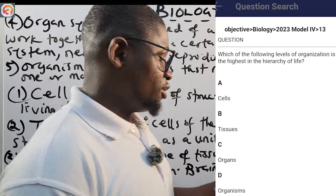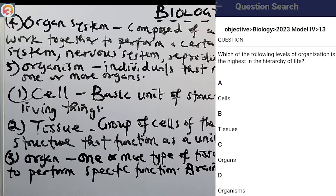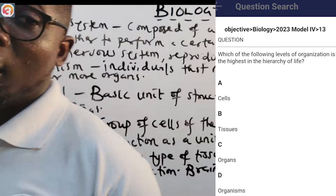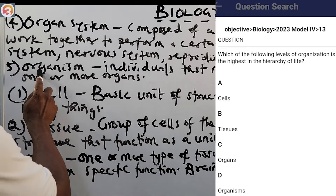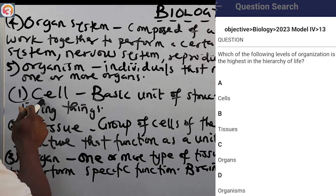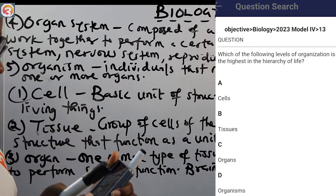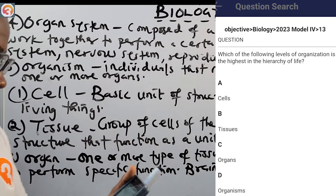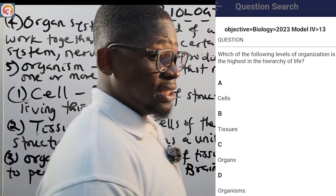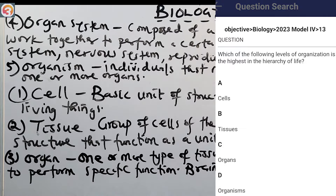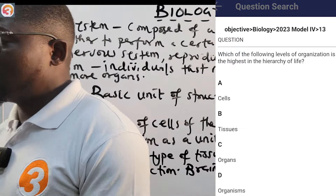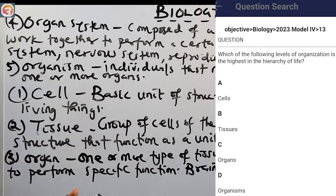Now 2023 number 18 asks: which of the following levels of organization is the highest in the hierarchy of life? The options are: A: cells, B: tissues, C: organ, D: organism. The correct answer is D: organism, which is the highest, while the cell is the lowest or smallest.